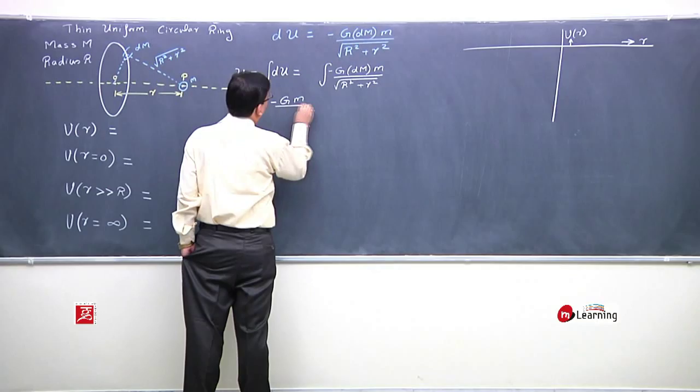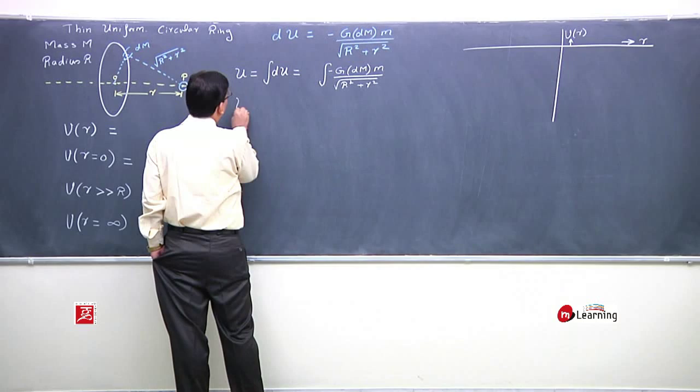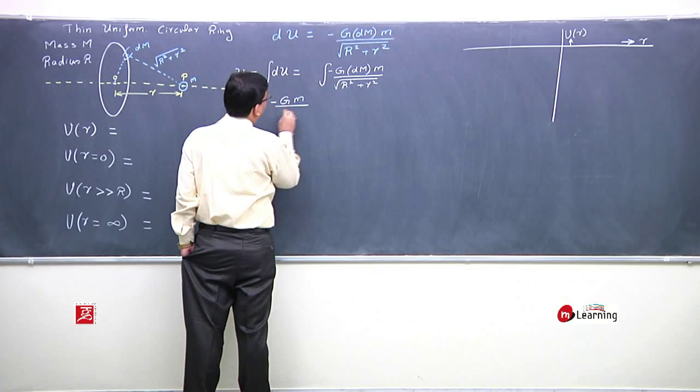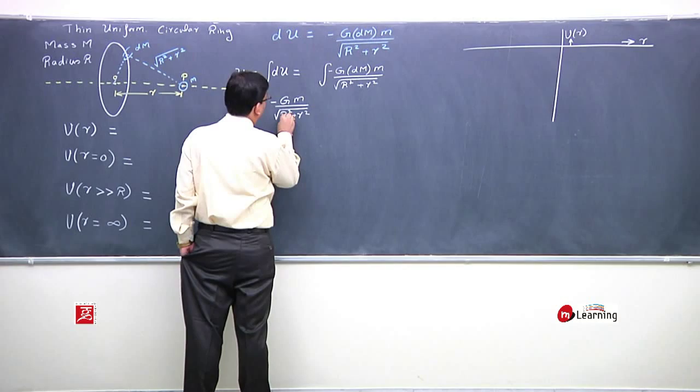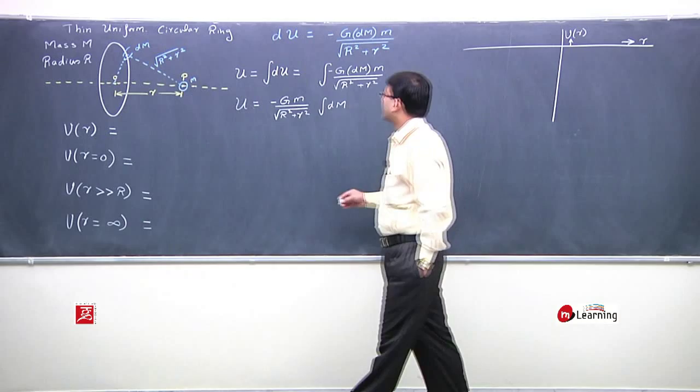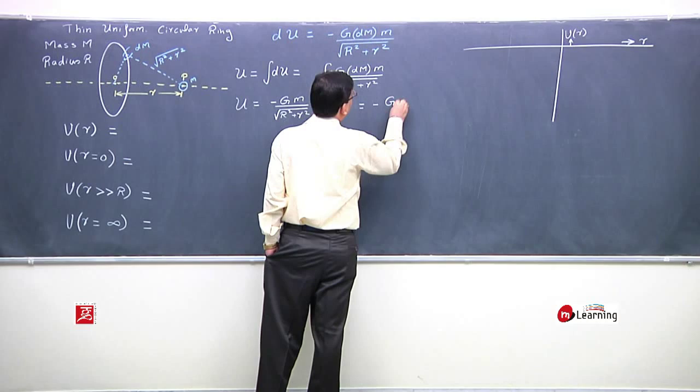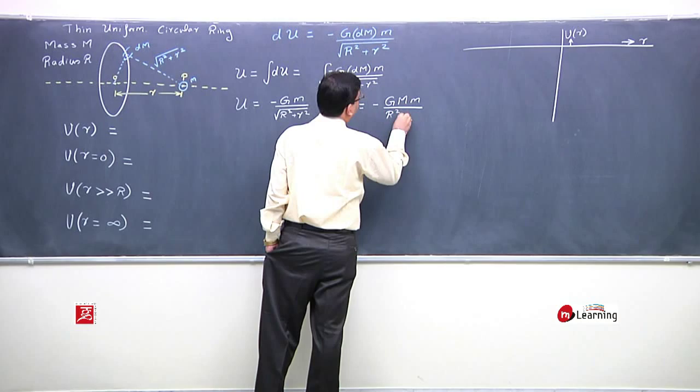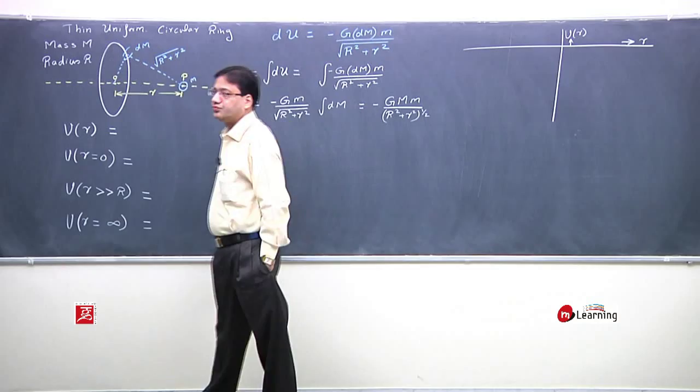m, G, and under root r square plus R square are constants. So taking them out as constant, integral of dm remains inside. Potential energy becomes minus G m M by r square plus R square to the power 1 by 2. Integral of dm is capital M.